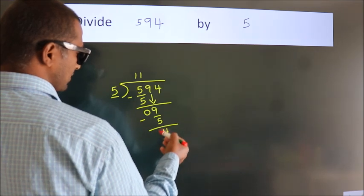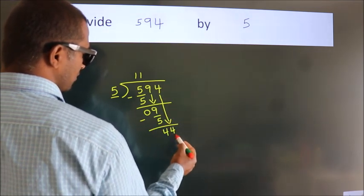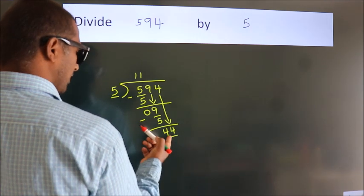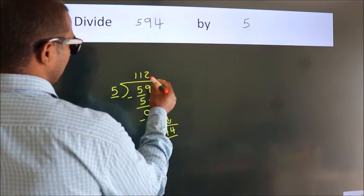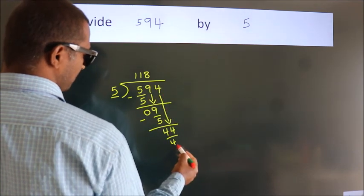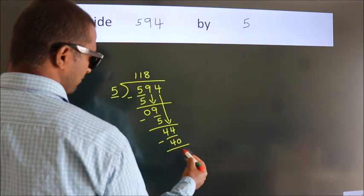After this, bring down the beside number, so 4 down, so 44. A number close to 44 in the 5 table is 5 times 8, 40. Now we subtract and we get 4.